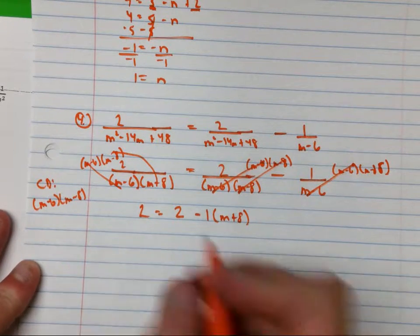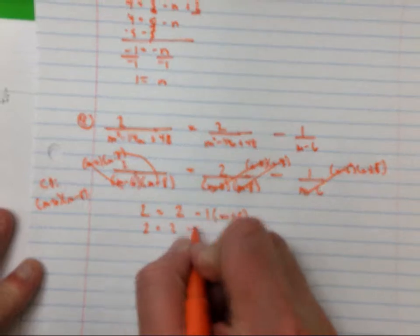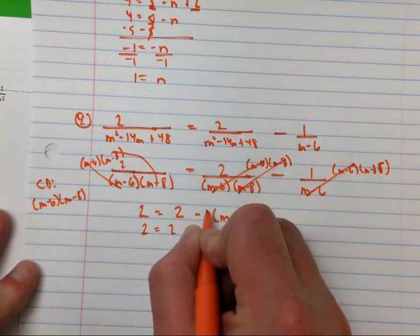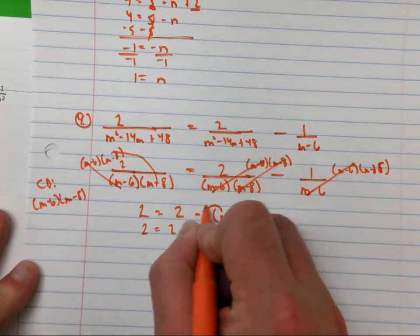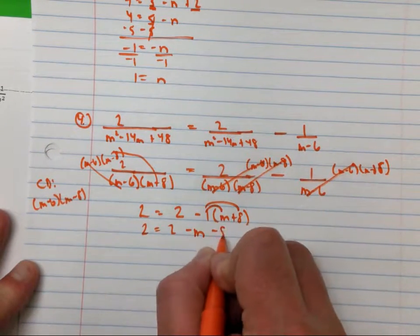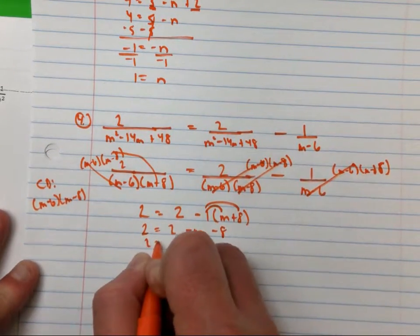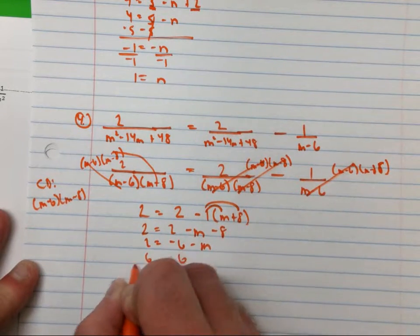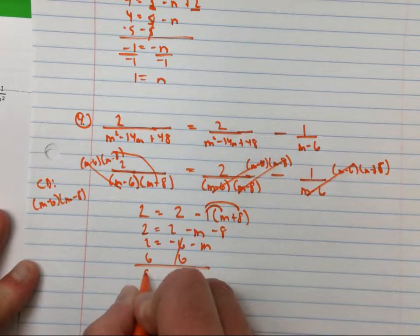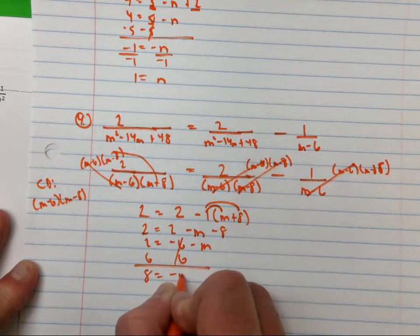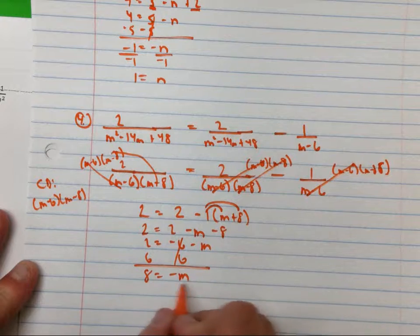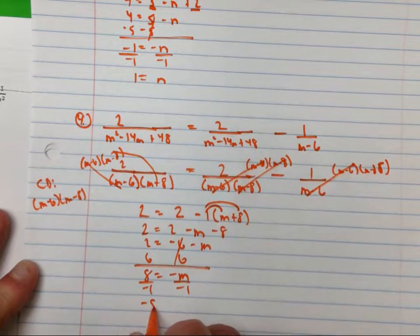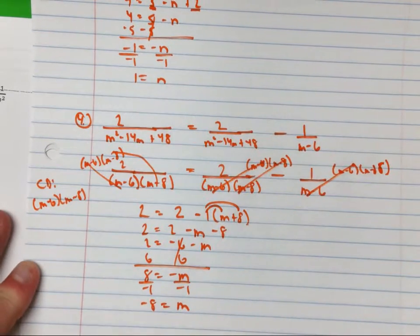Now I'm going to simplify. Negative one times m is negative m, and negative one times eight is negative eight. Combine like terms, then divide by negative one — negative eight equals m.